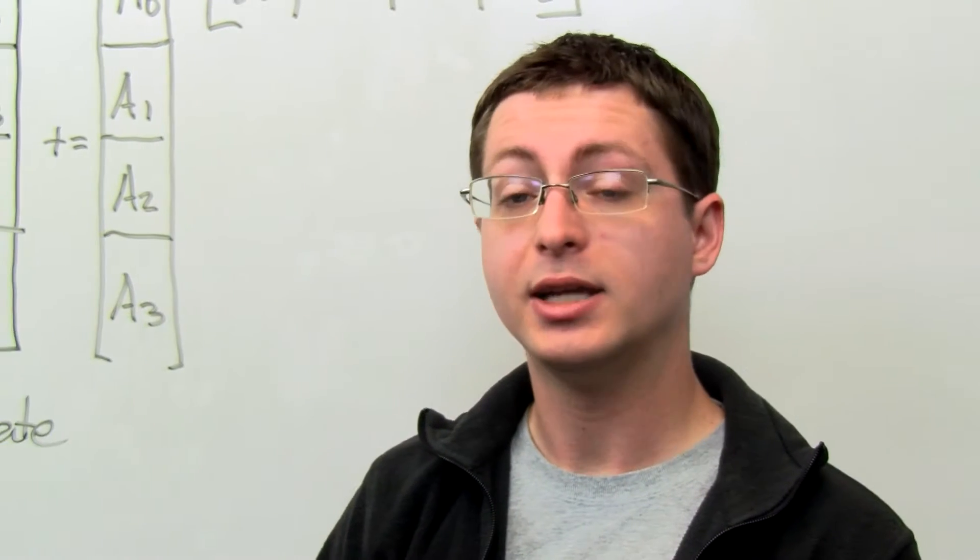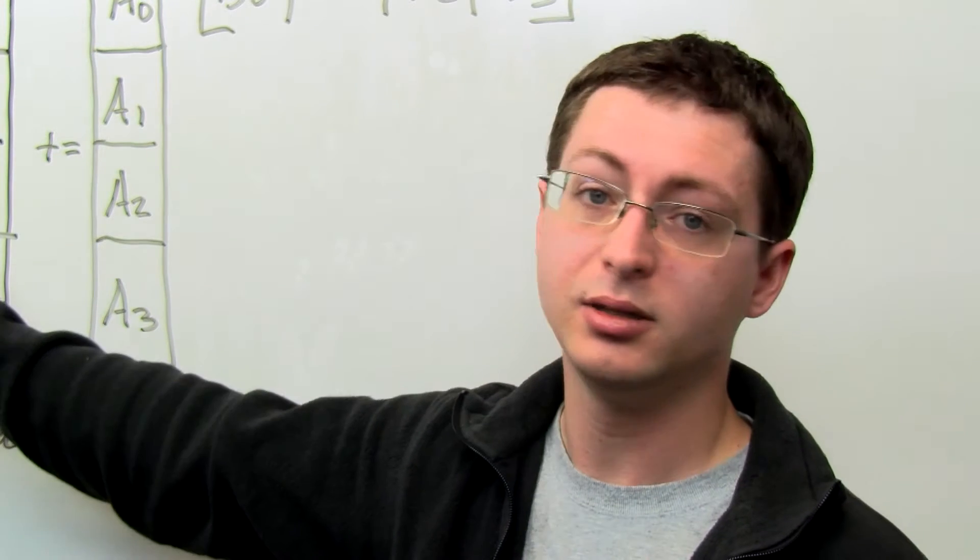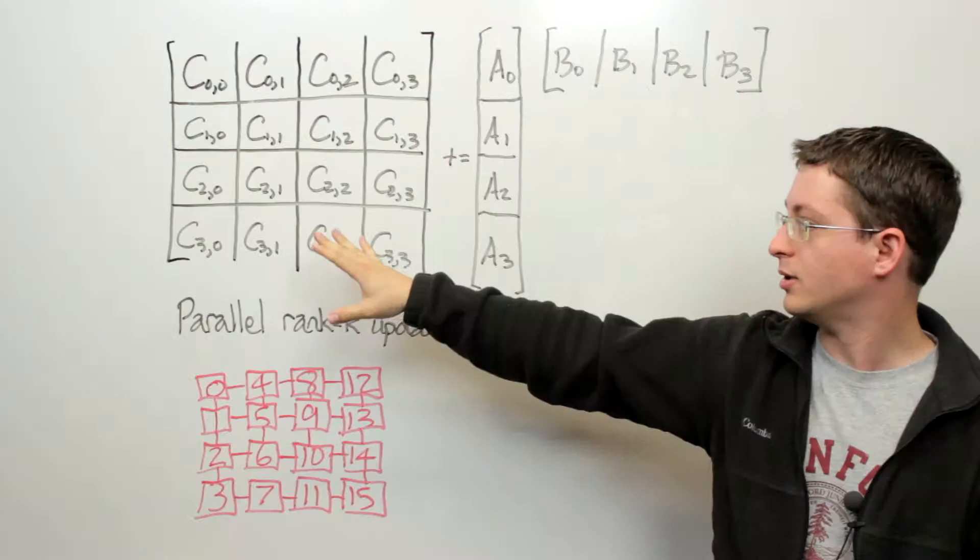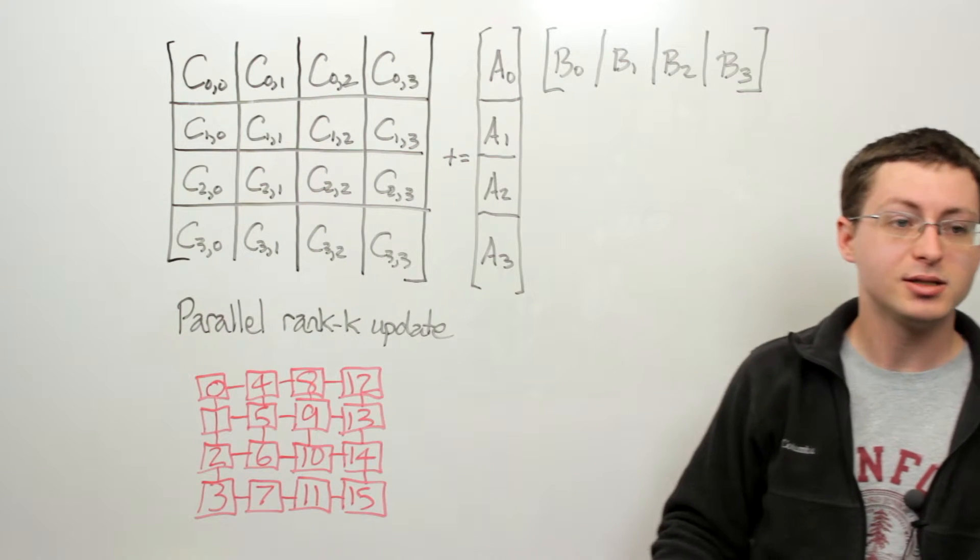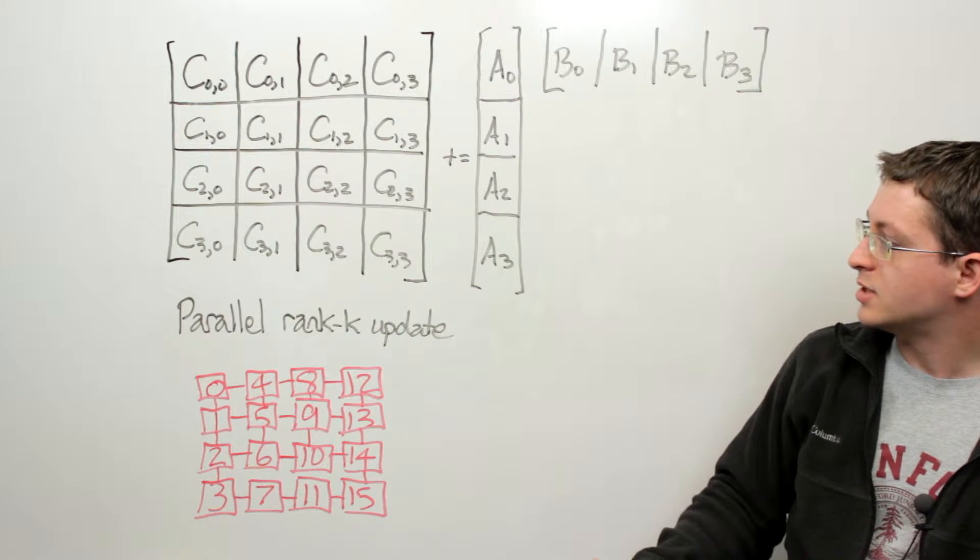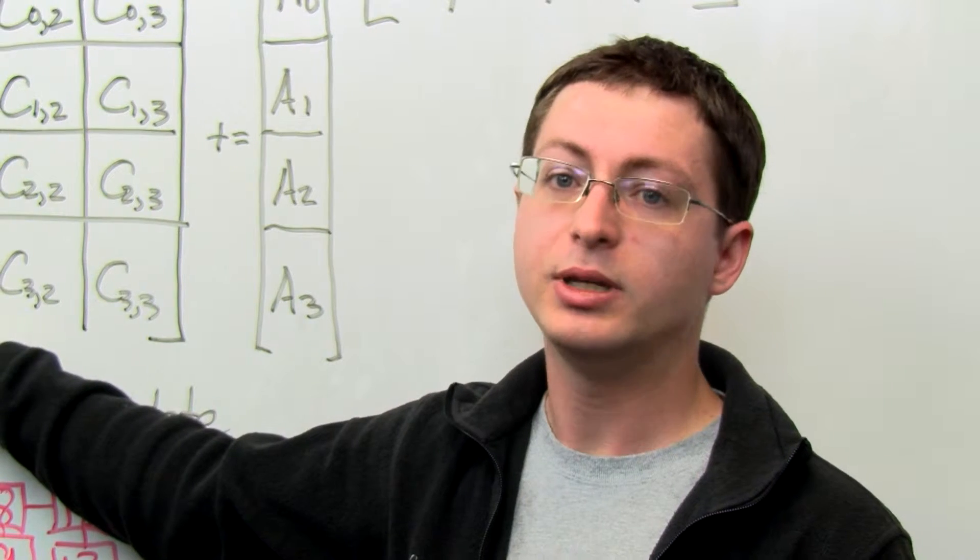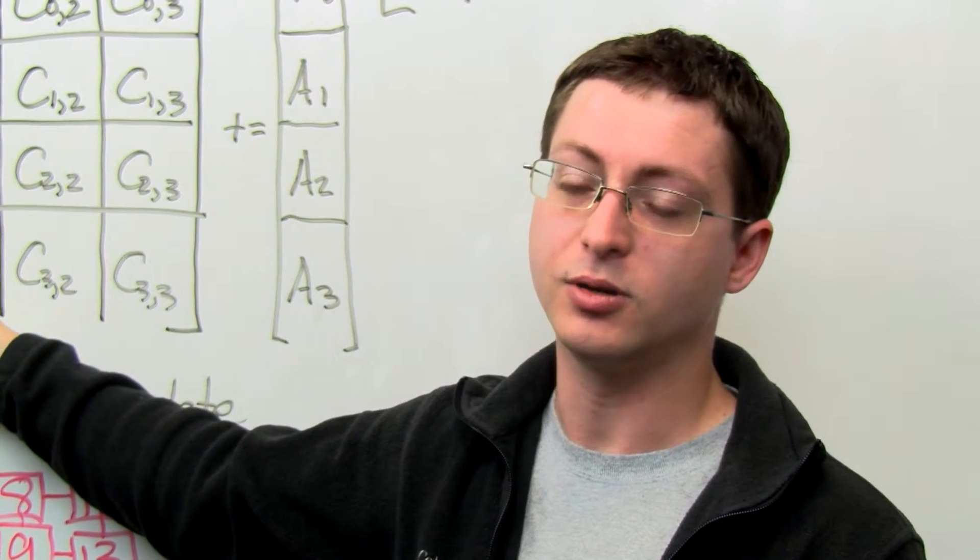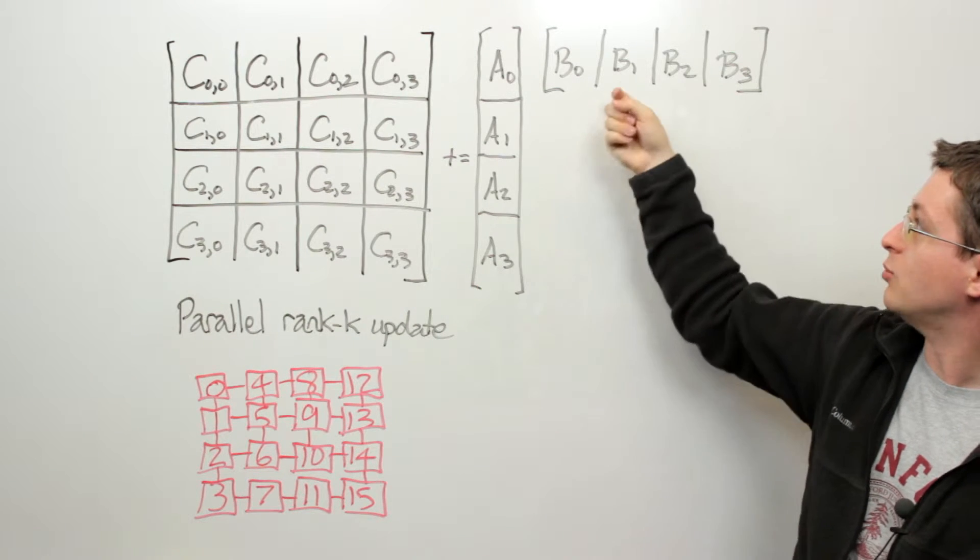Now suppose that we had 16 processes that we used to distribute this matrix C. So each process would get one of these blocks. So what that means is that if we considered say the process in the 3 1 index of this two-dimensional grid what he would need to perform his portion of the local update is A3 multiplied by B1.